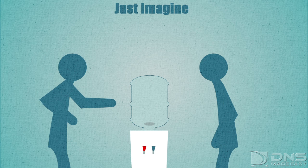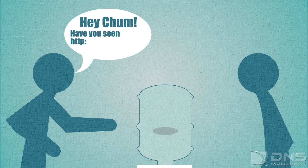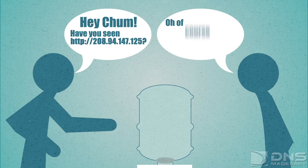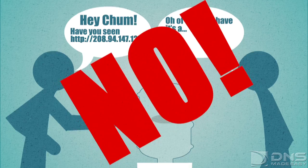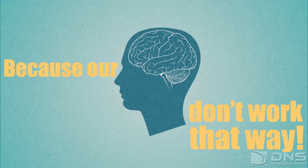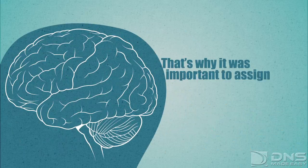Just imagine hanging around the water cooler and saying, 'Hey chum, have you seen HTTP colon slash slash 208.94.147.125?' 'Oh, of course I have. It's a...' No! Because our brains don't work that way! That's why it was important to assign names to these numbers.